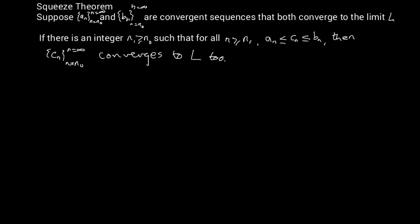You also need to understand how to read theorems technically. It says: suppose that a_n, from n equals n₀ to infinity, and another sequence b_n, from n equals n₀ to infinity, are both convergent sequences that both converge to the same limit L. It's very important that both a_n and b_n converge to the limit L. Then if there is an integer n₁ greater than or equal to n₀, such that for all n greater than or equal to n₁...